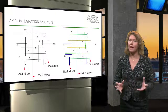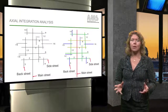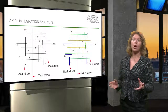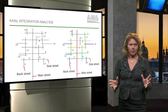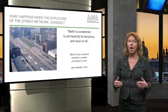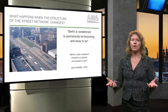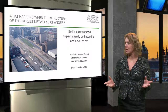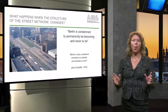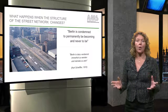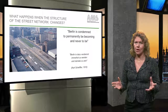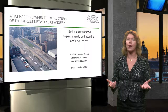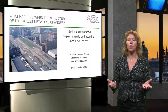So the red ones are the most accessible streets and the blue ones are the least accessible streets. What happens when the structure of the street networks change? One example to show how actual integration affects the city is the Berlin case, before and after the Berlin Wall.